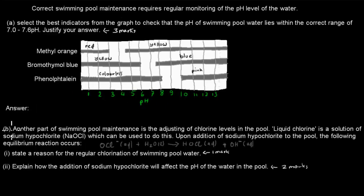That was question A. Part B: another part of the swimming pool maintenance is the adjusting of chlorine levels in the pool. Liquid chlorine is a solution of sodium hypochlorite, NaOCl, which can be used to do this. Upon addition of sodium hypochlorite to the pool, the following equilibrium reaction occurs: OCl⁻ plus H₂O goes into HOCl plus OH⁻. State a reason for the regular chlorination of swimming pool water. That's worth one mark. Explain how the addition of sodium hypochlorite will affect the pH of the water in the pool. That's worth two marks. When you're ready, pause the video, attempt the question, and then press play when you've done your answer.